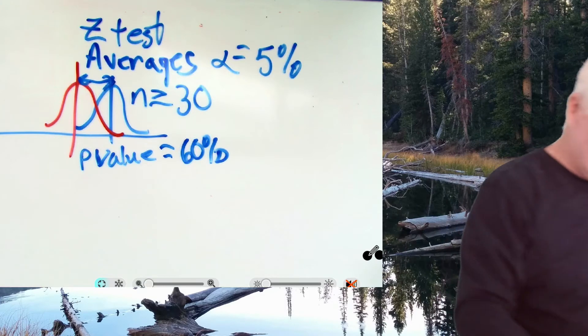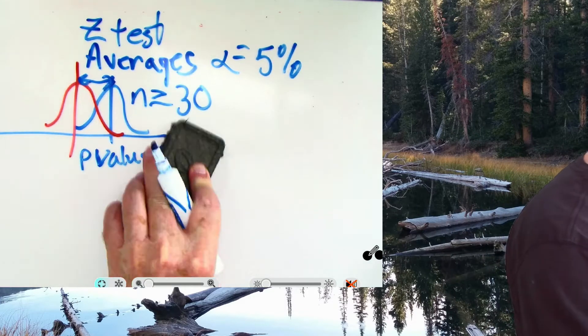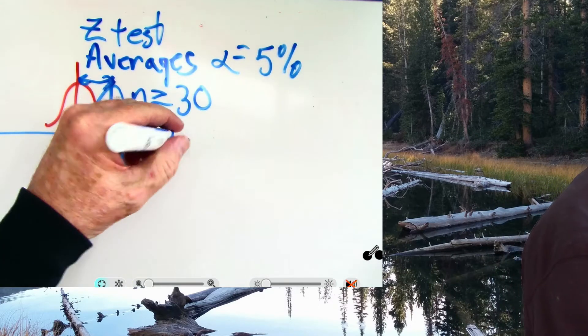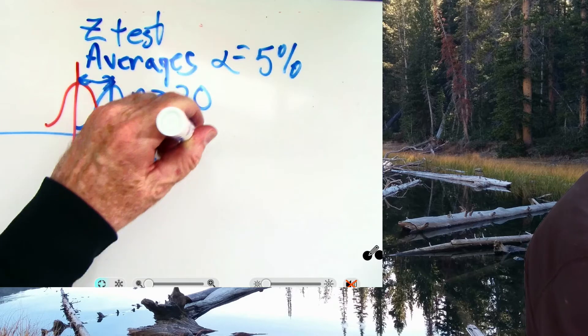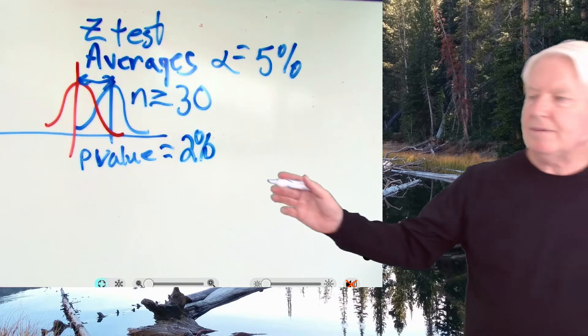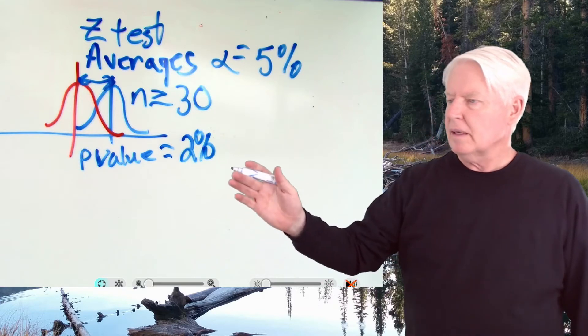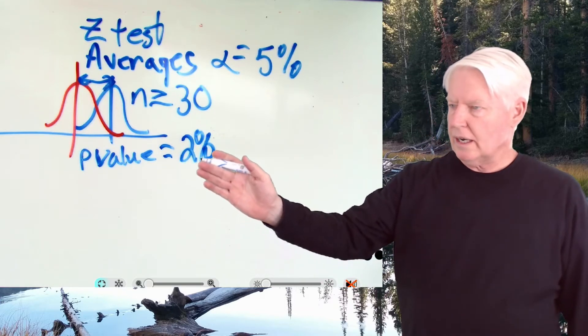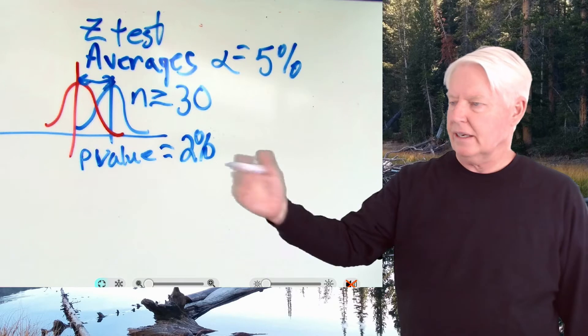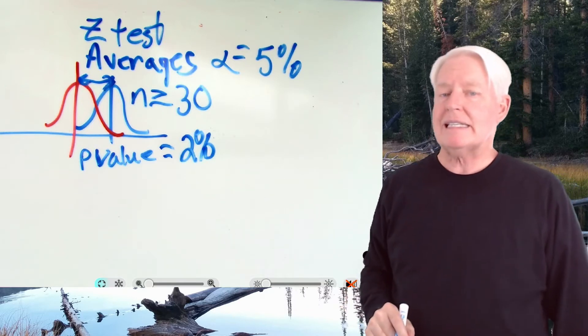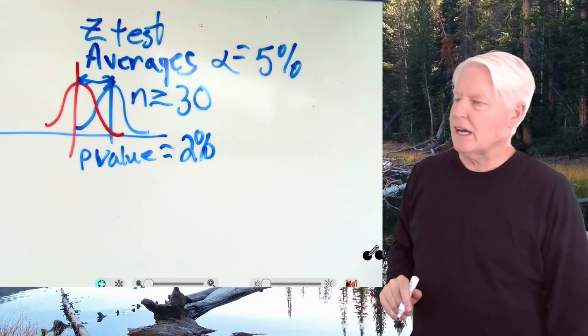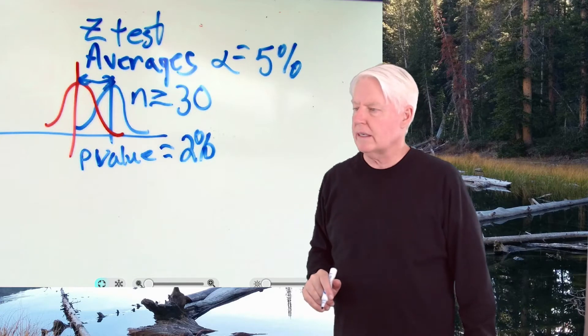Now, if this P value was, let's say, 2%. Oh, the P value, the actual risk of saying the averages are different and being wrong, is a 2% chance. I'm willing to take a 5%, so this becomes statistically significant. I know we've discussed that before, but I just wanted to go over it briefly as a summary.